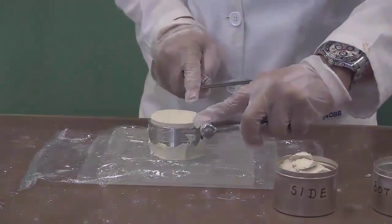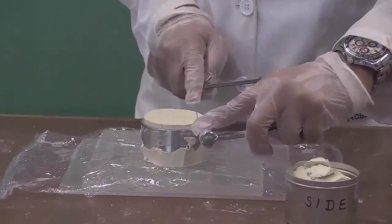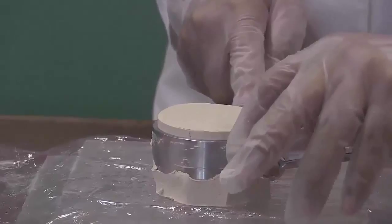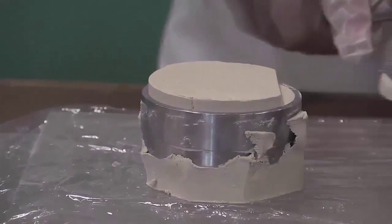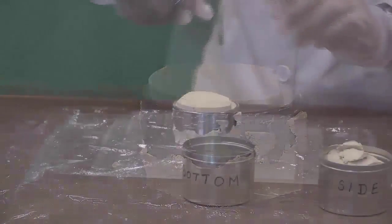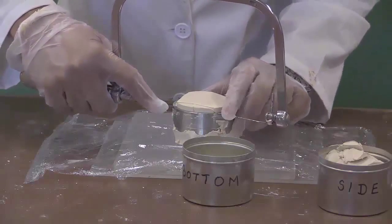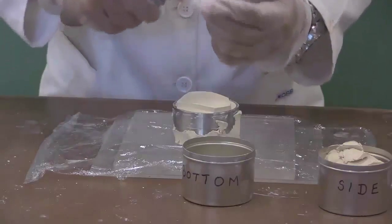Carefully trim the sample flush with the thick blunt edge of the odometer ring using the wire saw. Upon each trimming, remember to clean the wire saw to reduce the sample disturbance during the trimming process. Place the sample of the bottom trimmings into the second metal container and these trimmings will be used for the determination of the moisture content.